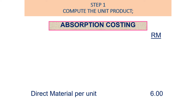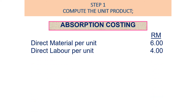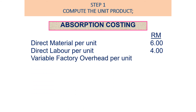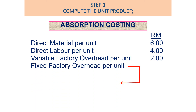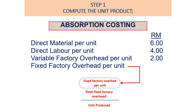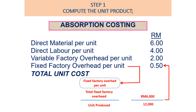Step 1: Compute the unit product cost. Under absorption costing: direct material RM6, direct labor RM4, variable factory overhead RM2, plus fixed factory overhead per unit — calculated as total fixed factory overhead divided by units produced: RM6,000 divided by 12,000 units equals RM0.50. Therefore, total unit product cost under absorption costing is RM12.50.